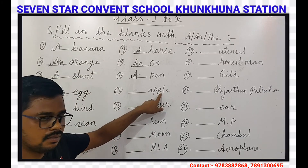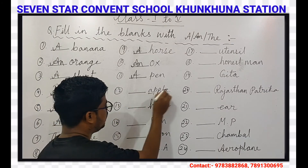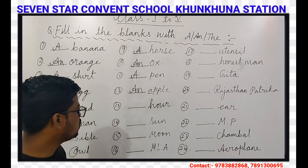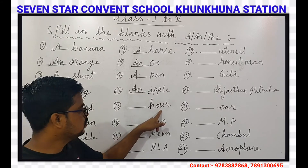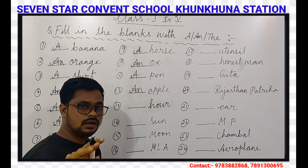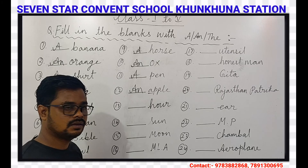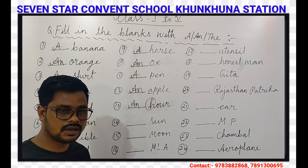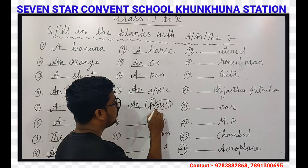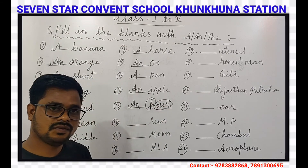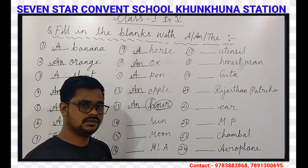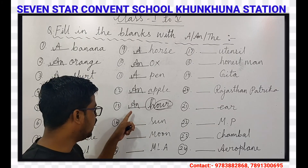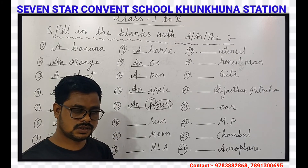Our next question is Apple. Apple's first letter is A, and A is a vowel, so AN will come here. Our next question — AN will come here. Why? Because the first letter H is silent. We only pronounce O-U-R. So if there is any word where H is silent, then we have to use AN before the word.